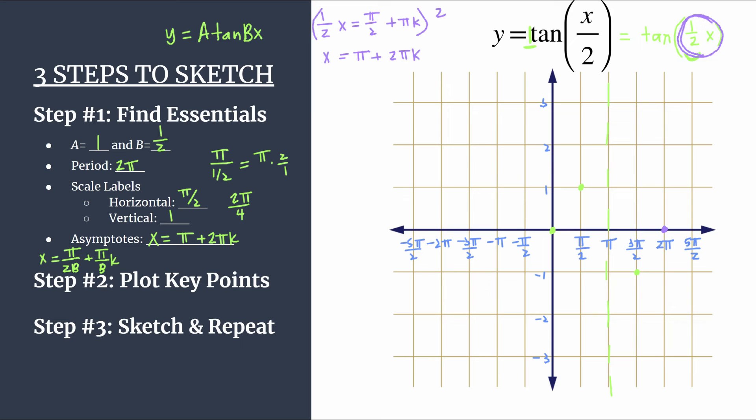So step three, sketch and repeat. So we're sketching this split cycle of tangent. And all I mean by that is that it has the asymptote in the middle of the cycle. And we've got one full cycle of tangent of one half x or x over 2.